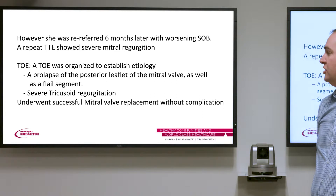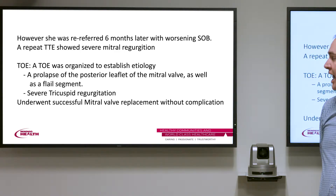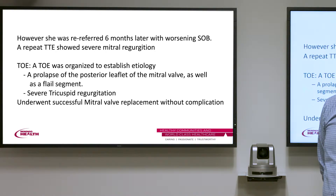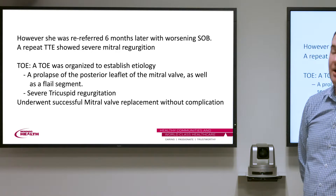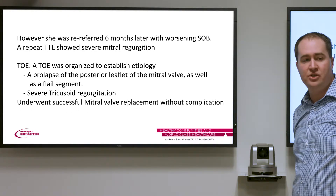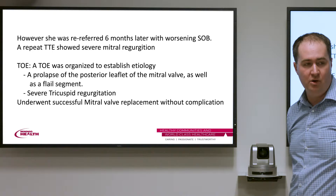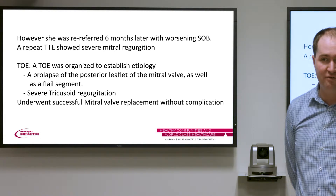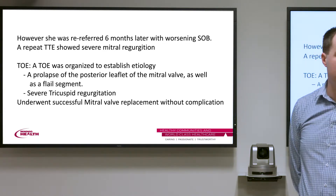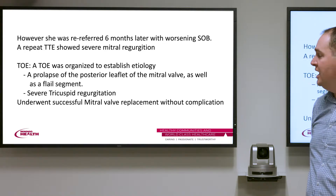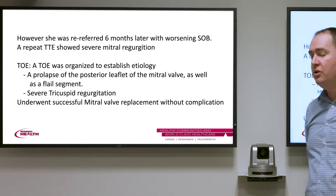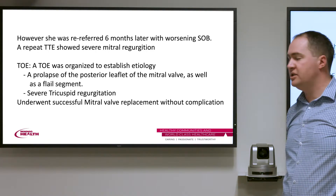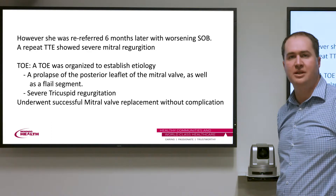Not infrequently, these patients return earlier than their planned review with worsening shortness of breath — her TTE now showed severe mitral regurgitation. It's really important to understand the etiology of mitral regurgitation as it affects management. She underwent a transoesophageal echo, which is much better at evaluating the mitral valve, and this showed a prolapse of the posterior mitral valve leaflet — likely the original cause of her mild-to-moderate MR — plus a flail segment, probably due to rupture of the subvalvular chordae, causing progression to severe MR.